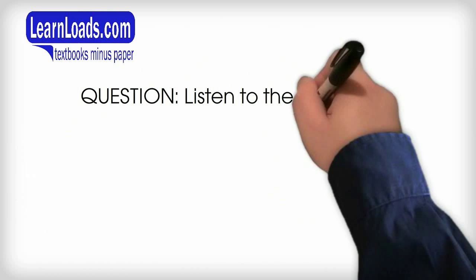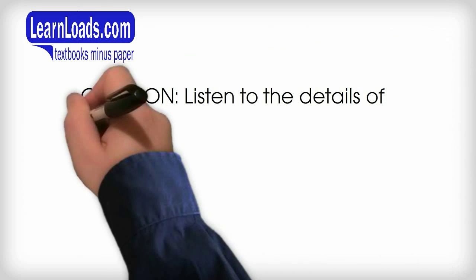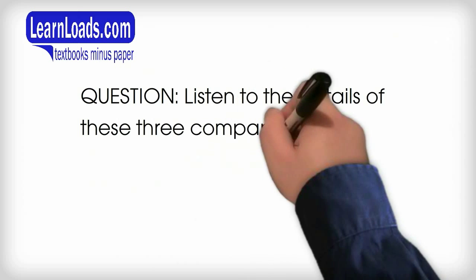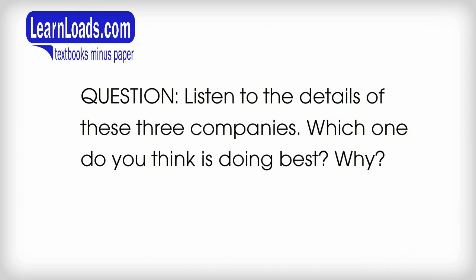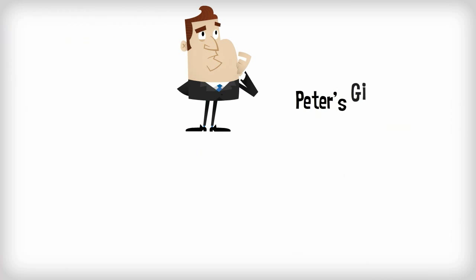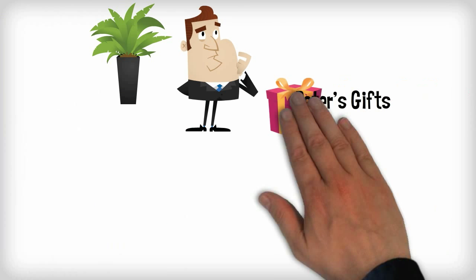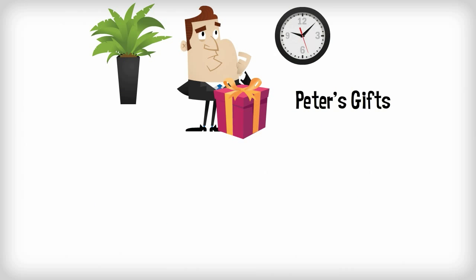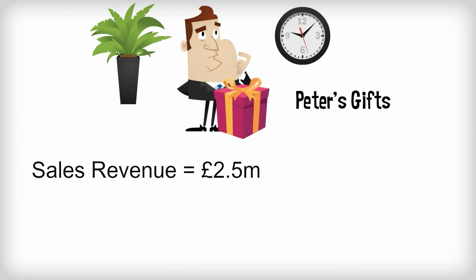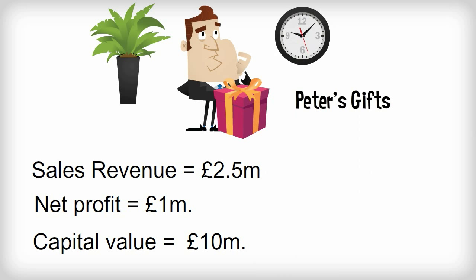Look at the details of these three companies. Try and decide which company you think is doing best. Peter is the managing director of Peter's Gifts, an online gift company. His sales revenue is £2.5 million, his net profit is £1 million and his capital value is £10 million.